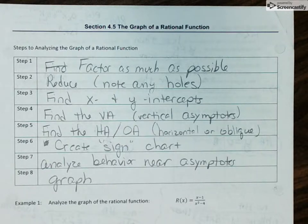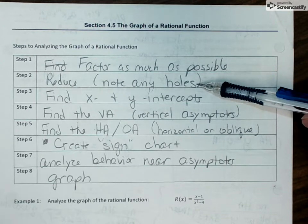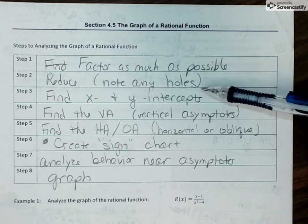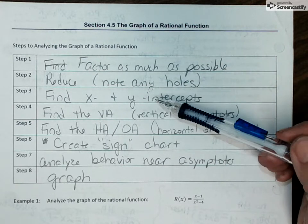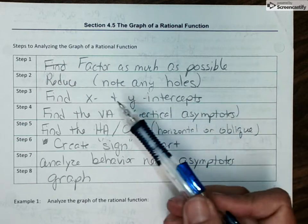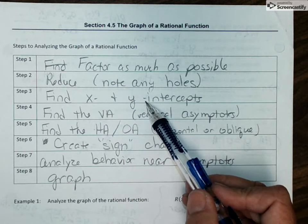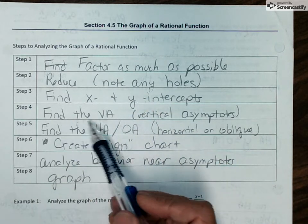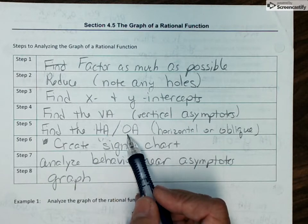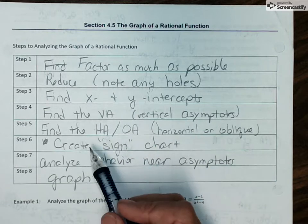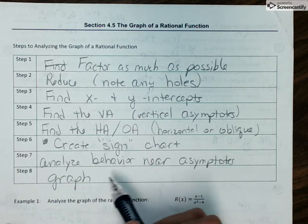So we need to factor as much as possible to begin with. I'm going to go ahead and just write them all down. So pause the video to copy down these notes. We're going to factor the numerator and denominator as much as we can. We're going to reduce. If you have the same factor in the numerator and denominator, you want to cancel them, but note the location of the holes. We want to find x and y intercepts. Find x intercepts by setting the equation equal to zero. Find y intercepts by setting x equal to zero. We need to find our vertical asymptotes. We need to find if we have horizontal or an oblique asymptote. Remember, you can't have both, only one. We will create a sign chart. We will analyze the behavior near the asymptotes. And then we will graph it.